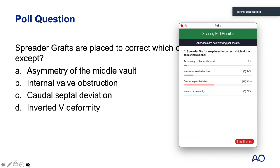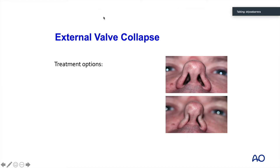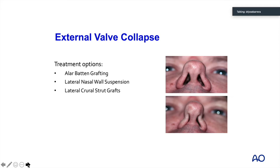The external valve is often seen in patients clinically — they come in and report collapsing when they breathe in. There are many treatment options: alar batten grafting, lateral nasal wall suspension suturing, lateral crural strut grafts, and alar turn-in flaps can also be utilized.